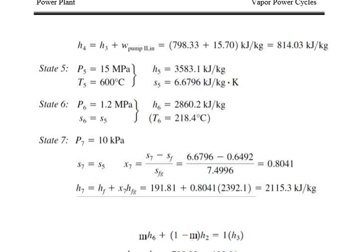Q_out = (1 − m)(H7 − H1) = (1 − 0.2270) × (2115.3 − 191.81) = 1486.9 kJ/kg. Thermal efficiency η = 1 − Q_out / Q_in = 1 − 1486.9 / 2769.1 = 0.463, or 46.3%. So in this numerical, the fraction of steam extracted is 0.2270 kg and the thermal efficiency is 46.3%.